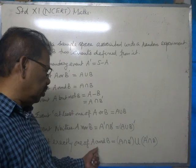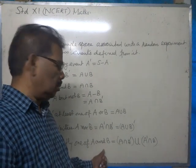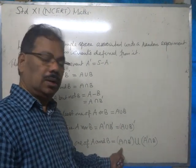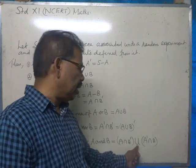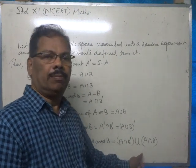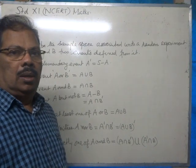Event exactly one of A and B. Then, it is A intersection B dash union A dash intersection B. Right, finish.